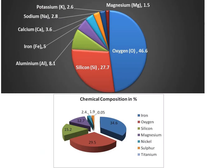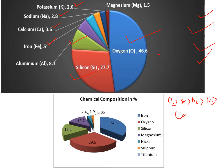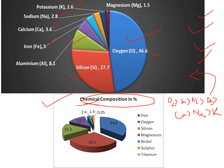Moving on to the composition of the crust, which is also very important: oxygen contains 46.6 percent, silicon contains 27.7 percent, aluminium contains 8.1 percent, iron contains 5 percent, calcium contains 3.6 percent, sodium contains 2.8 percent, and potassium contains 2.6 percent. So the sequence in the crust is: oxygen, silicon, aluminium, iron, calcium, sodium, and potassium.